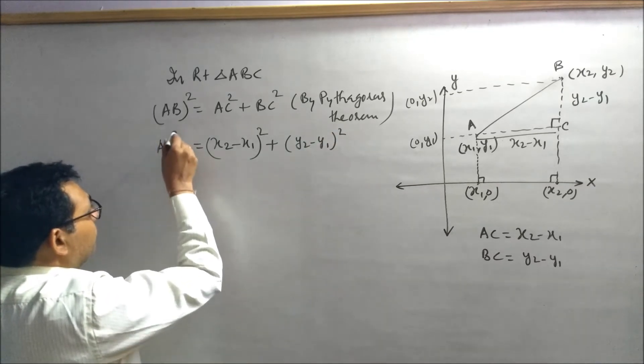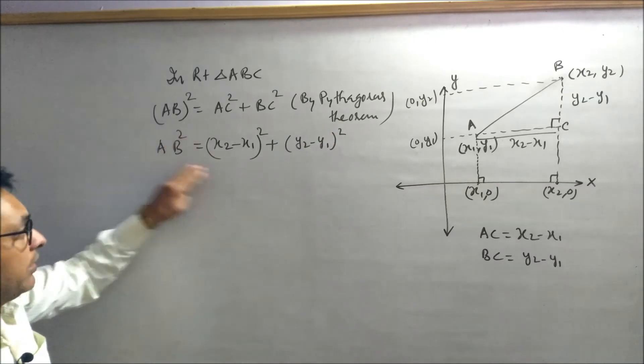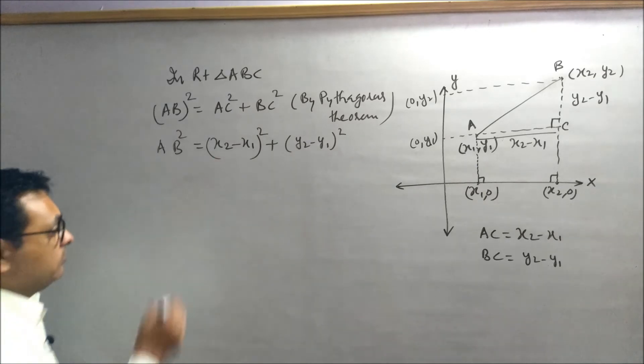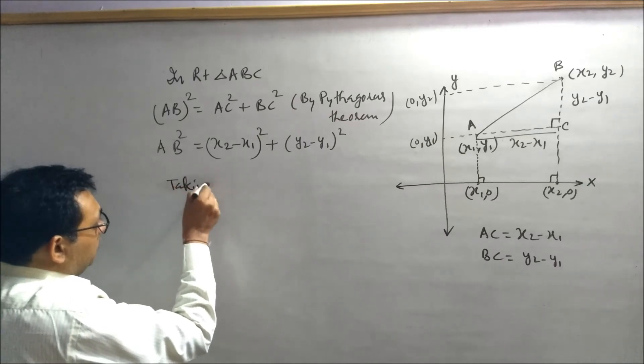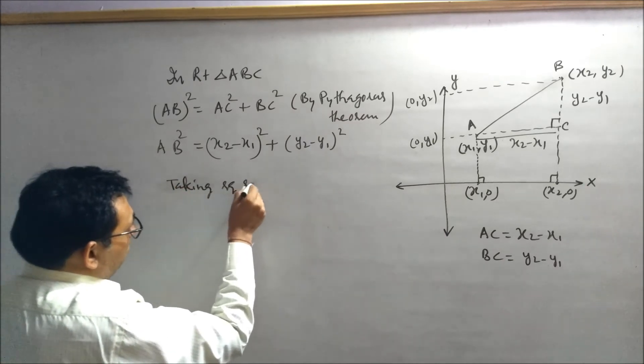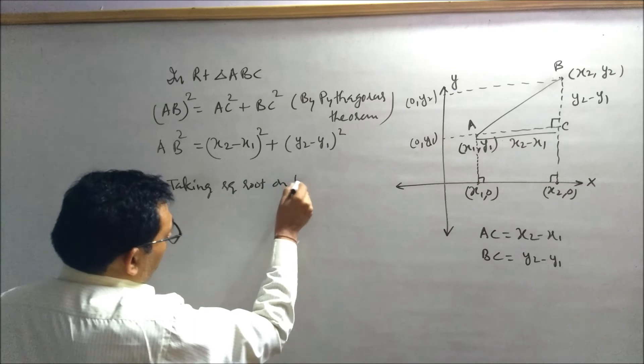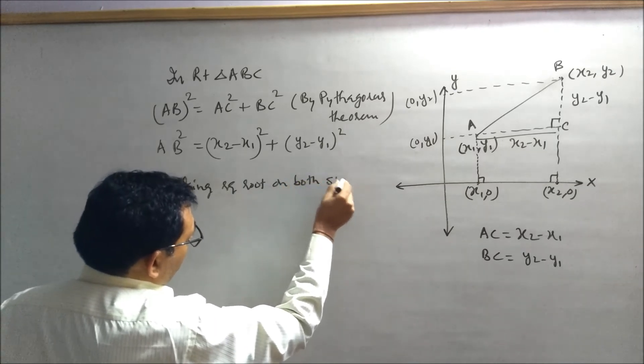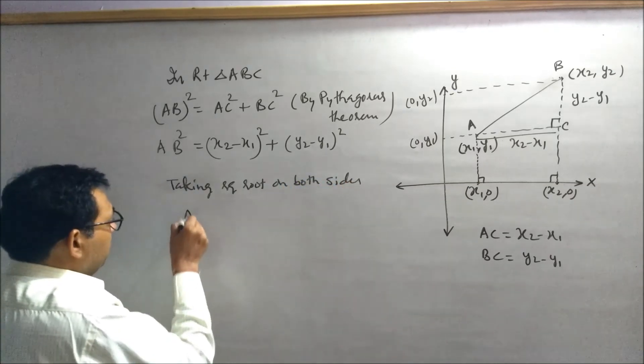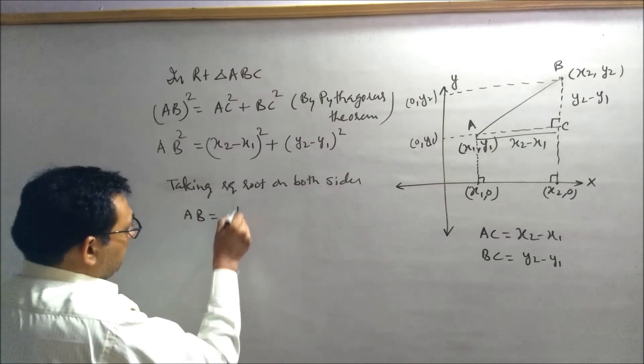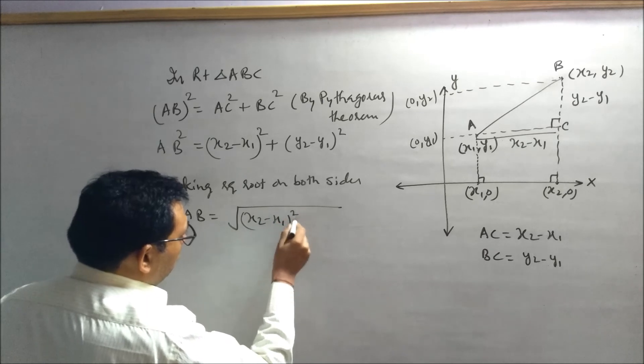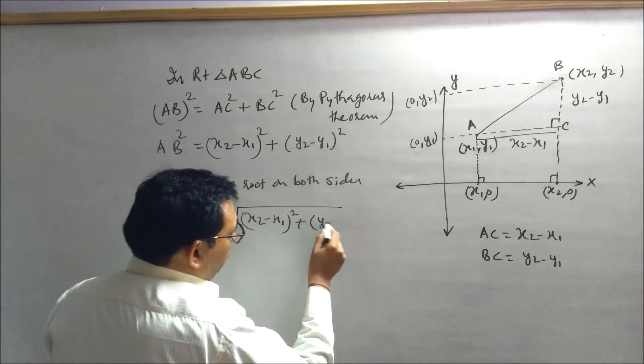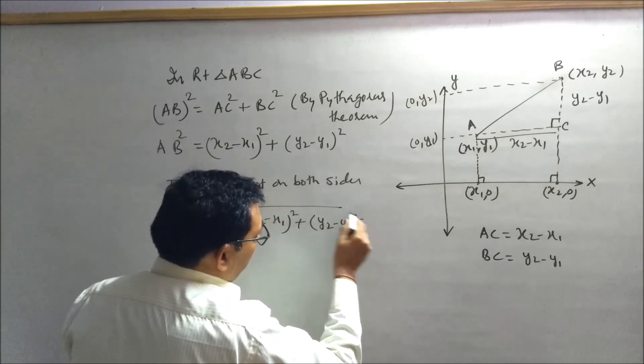This is square of AB. Now taking square root on both sides so that we can get AB. So this will be AB equals square root of [(x2 minus x1) whole square plus (y2 minus y1) whole square].